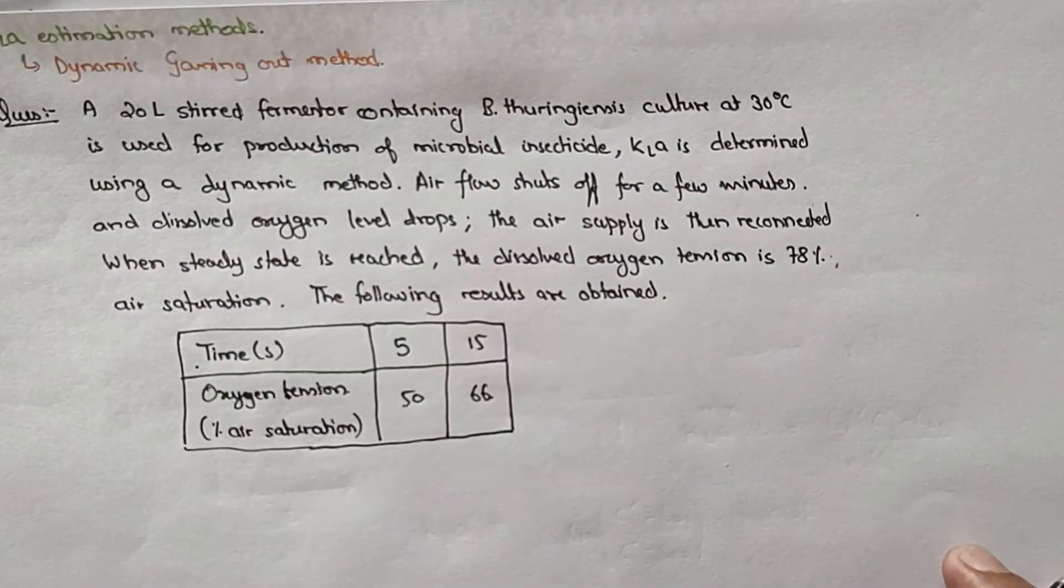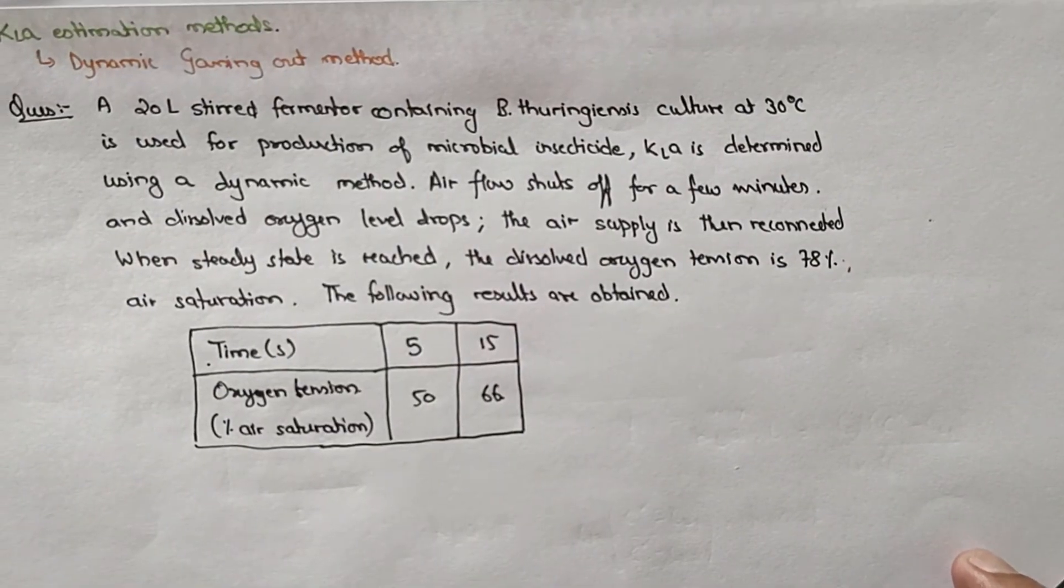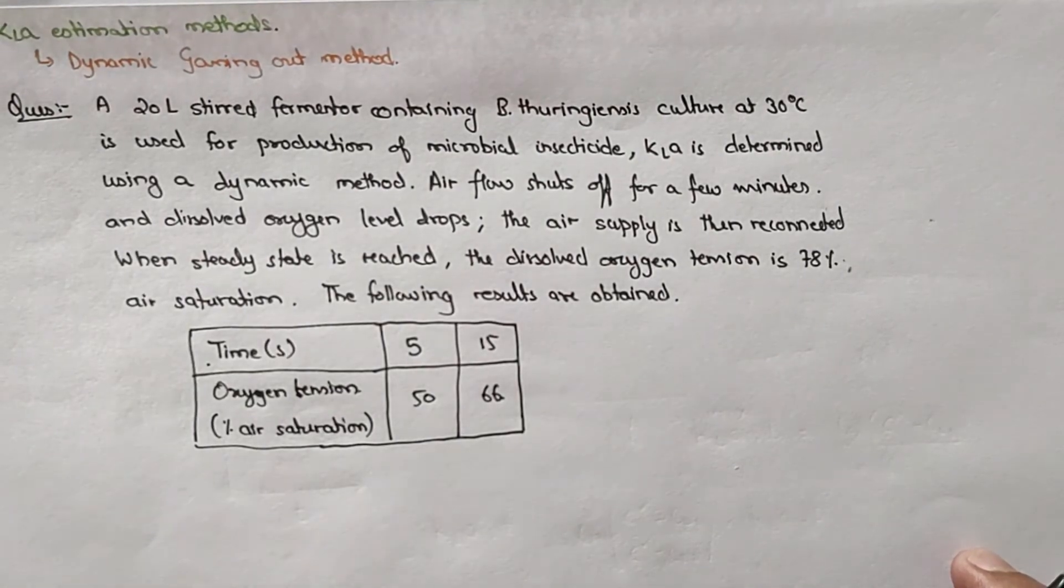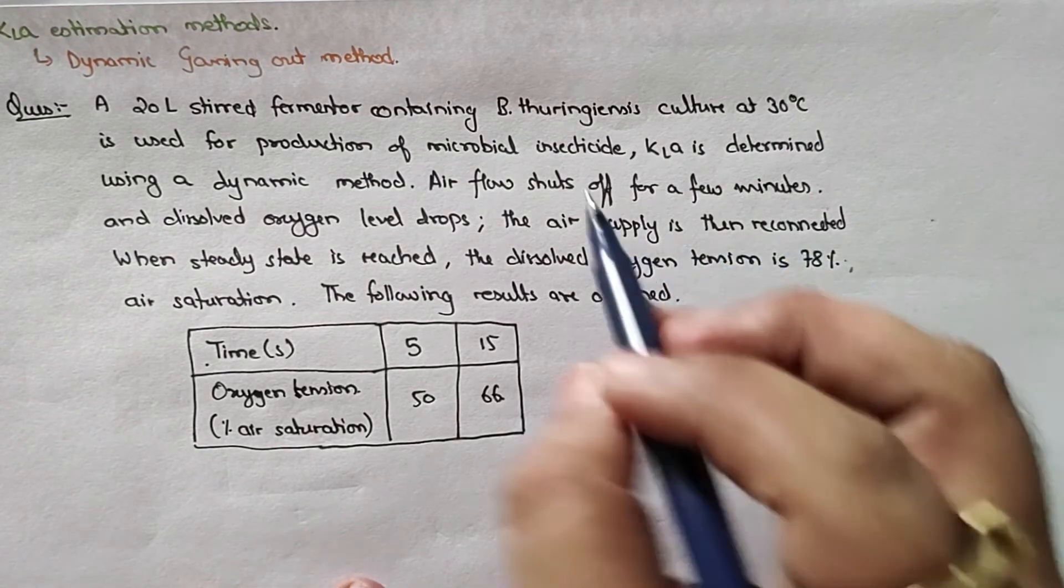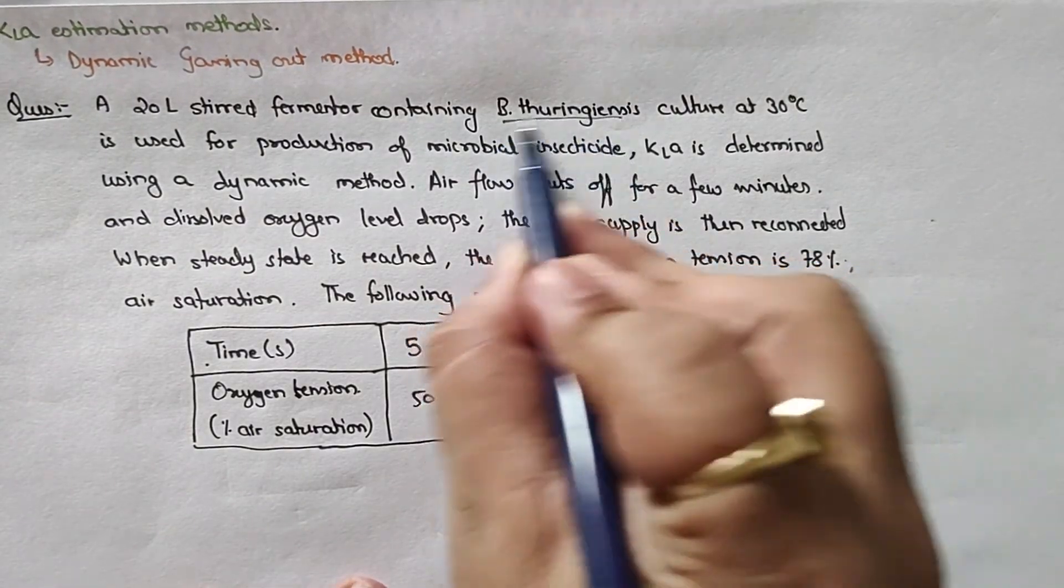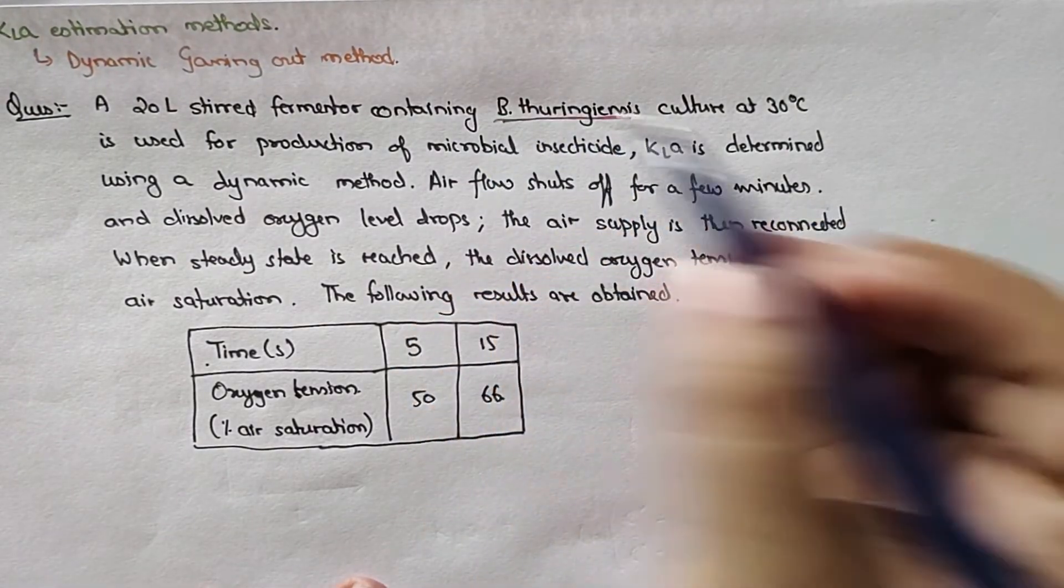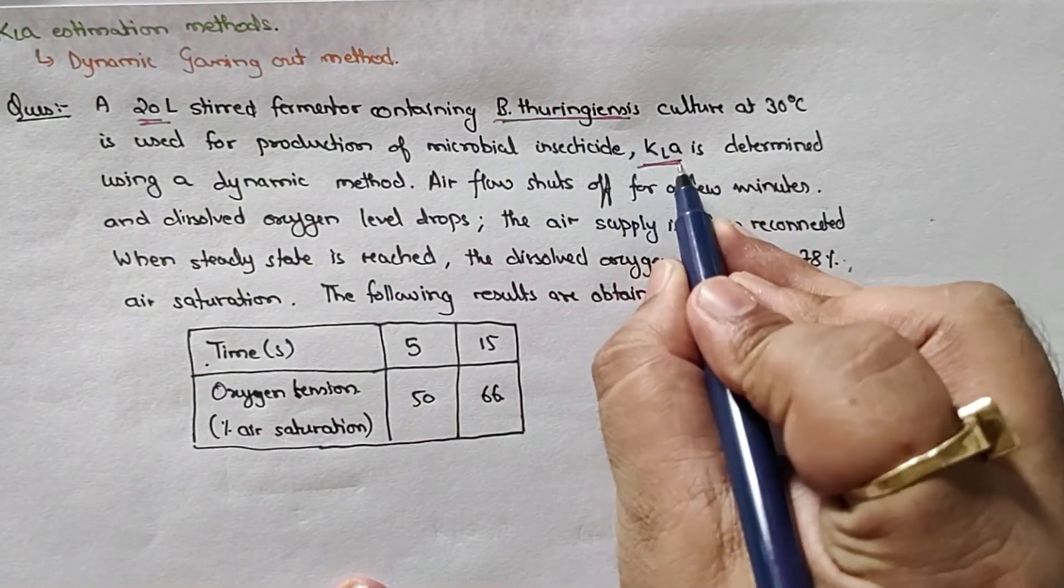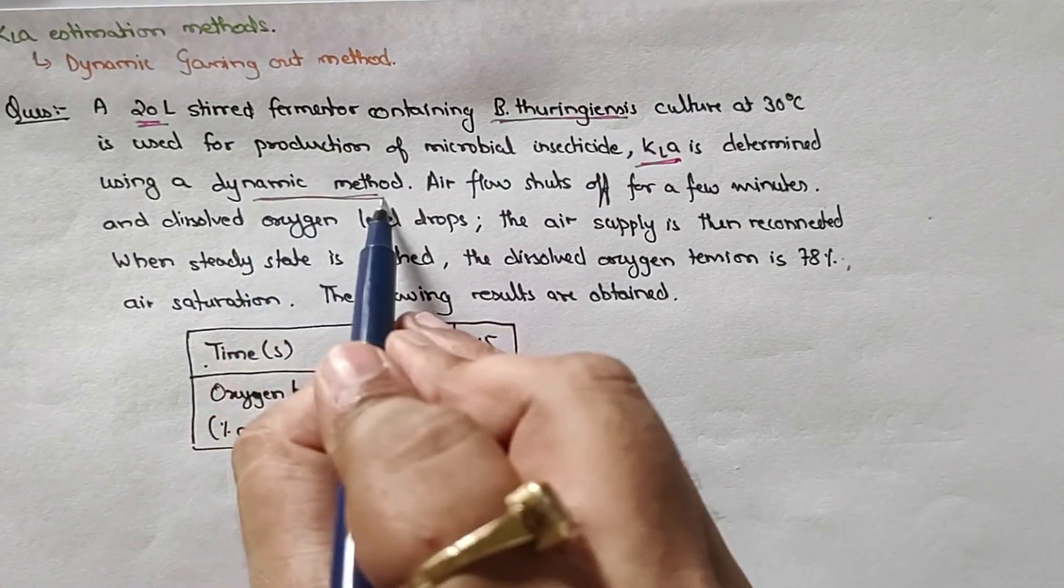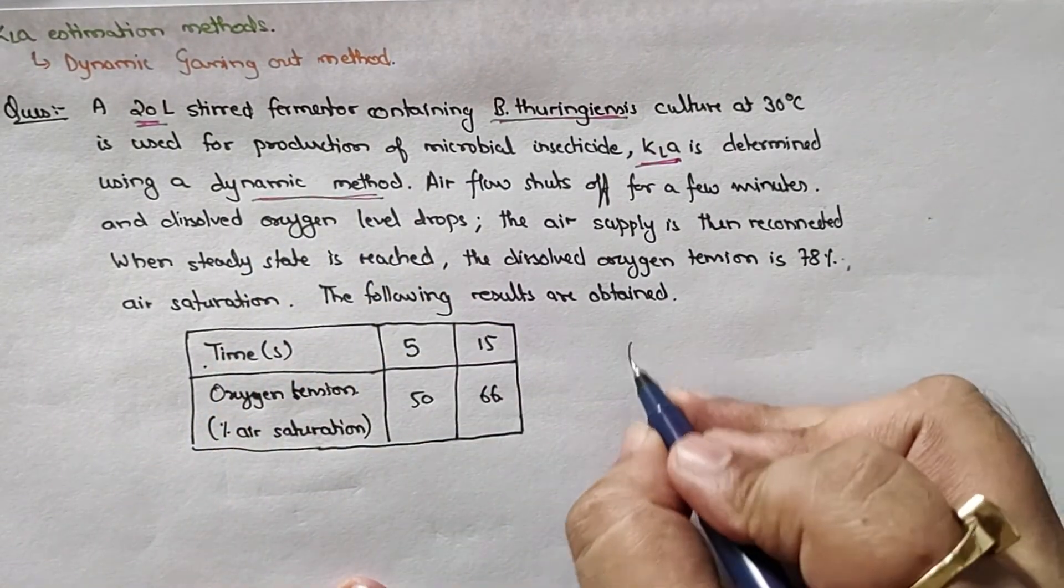So based on that dynamic gassing out method let's solve this numerical. This numerical says that there is a culture of Bacillus thuringiensis in a 20 liter fermenter and the KLA has to be determined using a dynamic method.